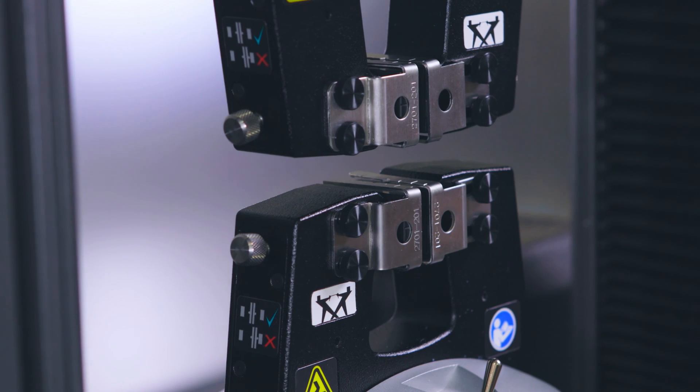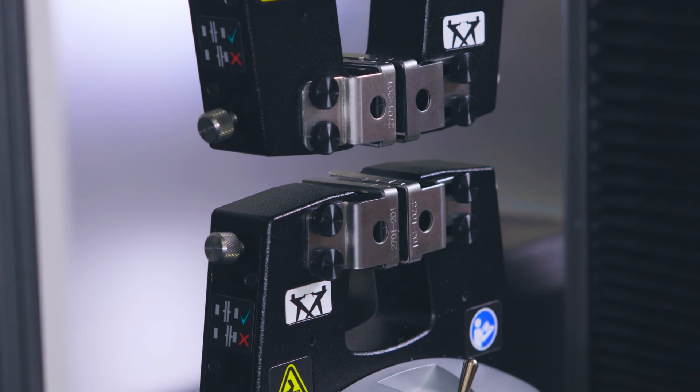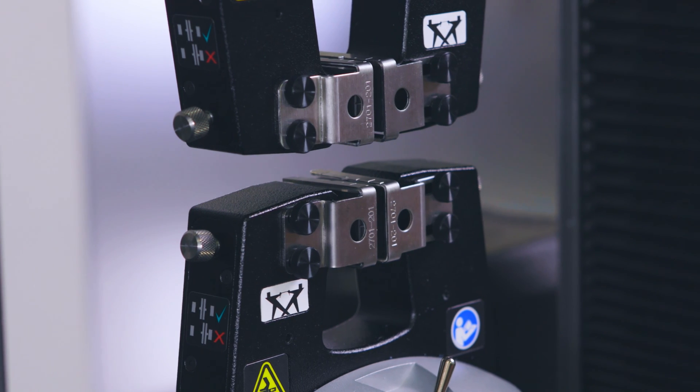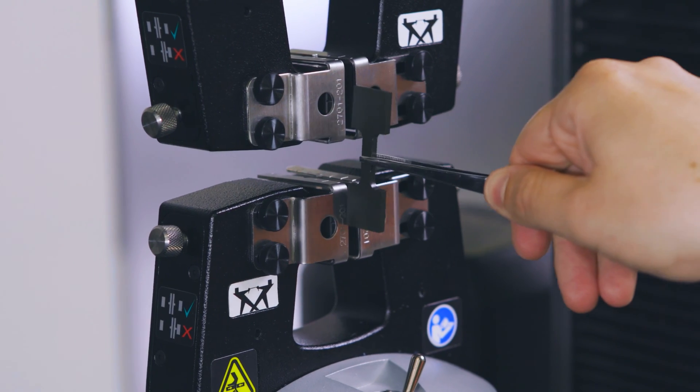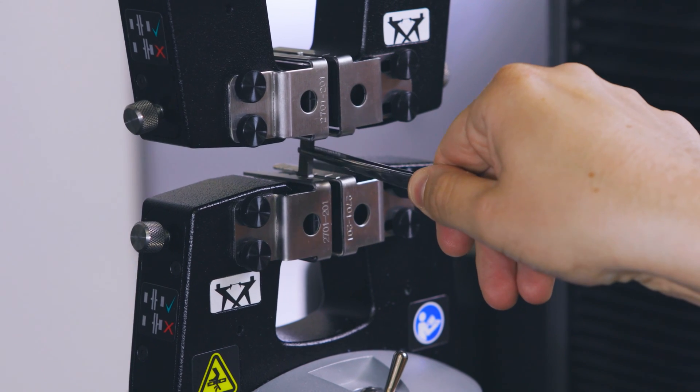When testing subsize samples, perhaps where the grips are 50 millimeters or less apart, we recommend using a clamping device to place the sample into the grips.